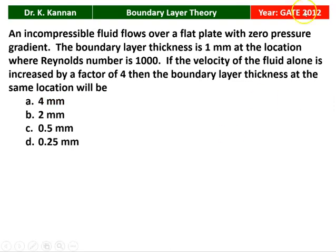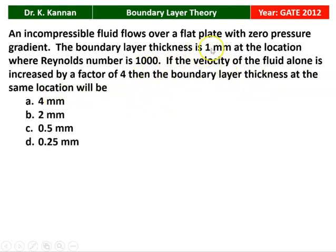The next question is from the 2012 question paper. An incompressible fluid flows over a flat plate with zero pressure gradient. The boundary layer thickness is 1 mm at a location where the Reynolds number is 1000. If the velocity of the fluid alone is increased by a factor of 4, what will be the boundary layer thickness at the same location?